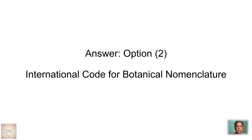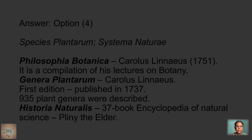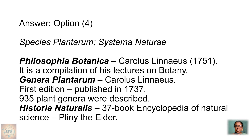Question 3 — ICBN stands for: (1) Indian Congress of Biological Names; (2) International Code for Botanical Nomenclature; (3) International Congress of Biological Names; (4) Indian Code of Botanical Nomenclature. Answer is option 2 — International Code for Botanical Nomenclature. Question 4 — Linnaeus described 5,900 species of plants in his book ___ in 1753 and 4,326 species of animals in his book ___ in 1758. Answer is option 4 — Species Plantarum and Systema Naturae.